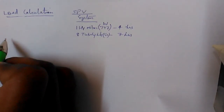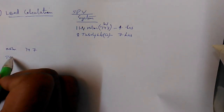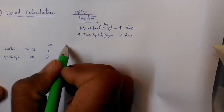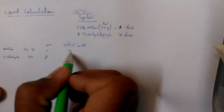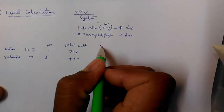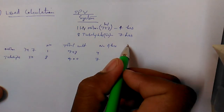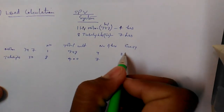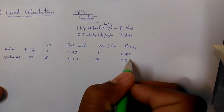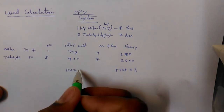First, we calculate the load. Motor: 747 watts, one unit. Tube lights: 50 watts, eight units. Total watt is 1147. Number of hours: four and seven respectively. Energy: 747×4 = 2988 watt-hours, and 50×8×7 = 2800 watt-hours. Total energy is 5788 watt-hours.